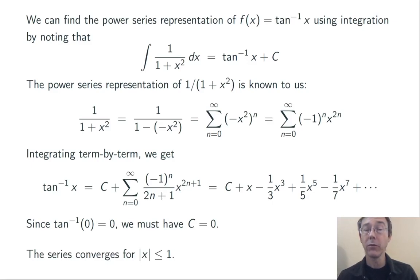The original series converged when the absolute value of x was less than 1. Here, for example, using the ratio test, we can show that it converges for the absolute value of x less than or equal to 1.